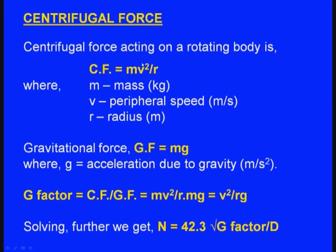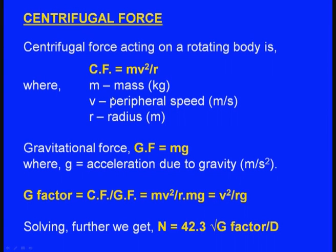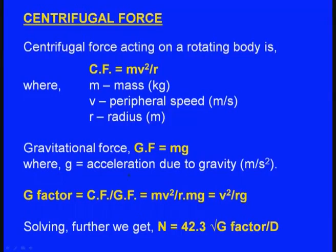The centrifugal force acting on a rotating body is CF = mv²/r, where m is mass in kilograms, v is peripheral speed in metres per second, and r is the radius in metres. Gravitational force GF = mg. The G-factor = CF/GF = v²/(rg). Solving further, the rotational speed n = 42.3 × √(G-factor / D), where D is the diameter.